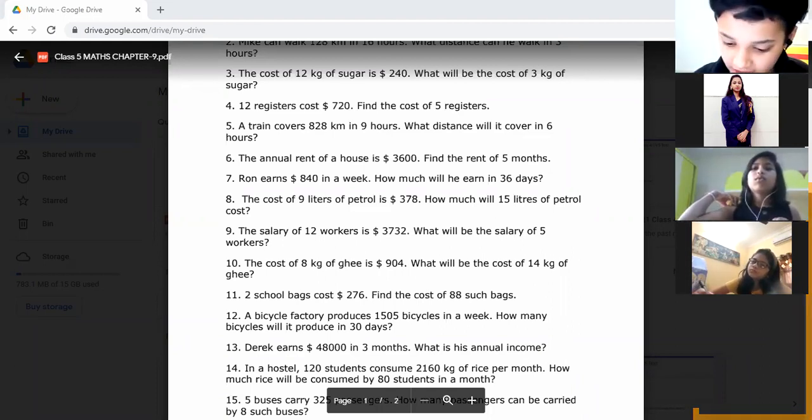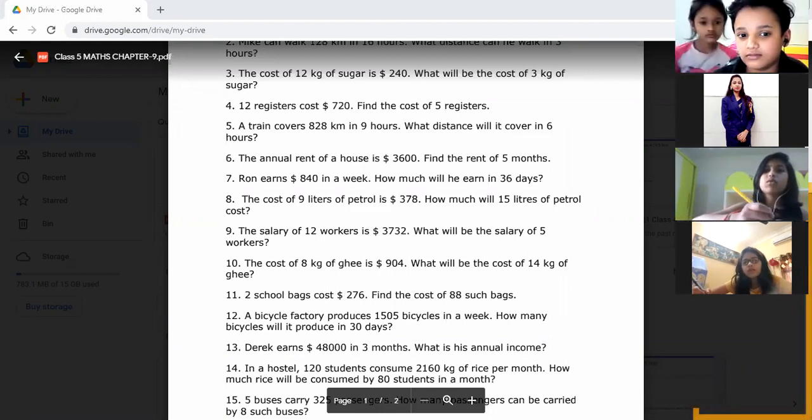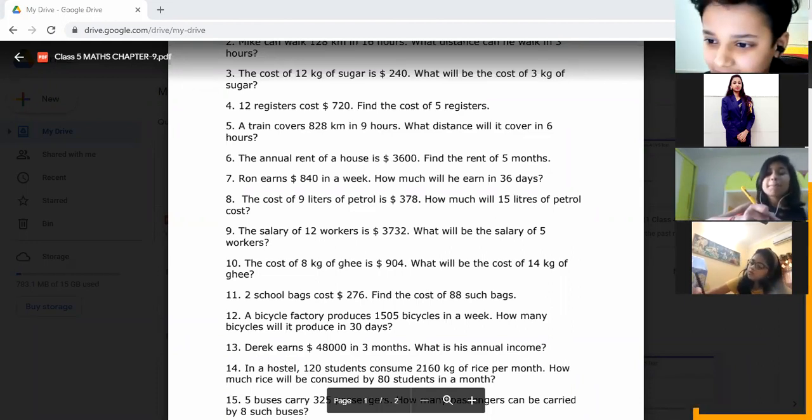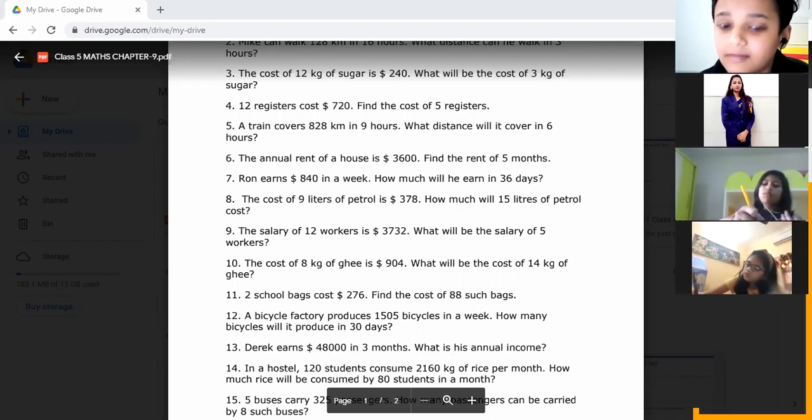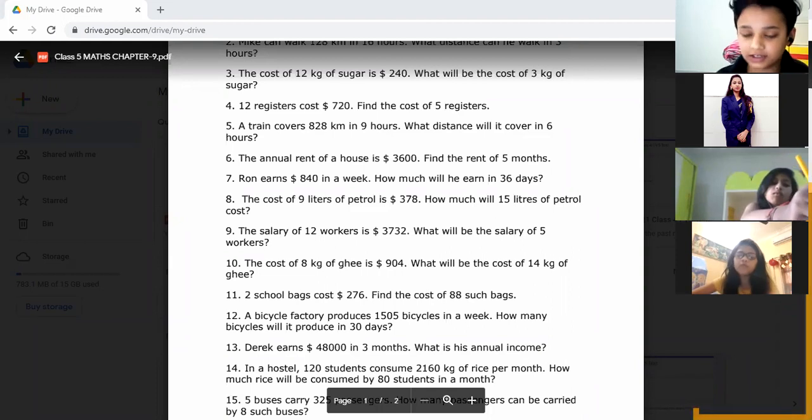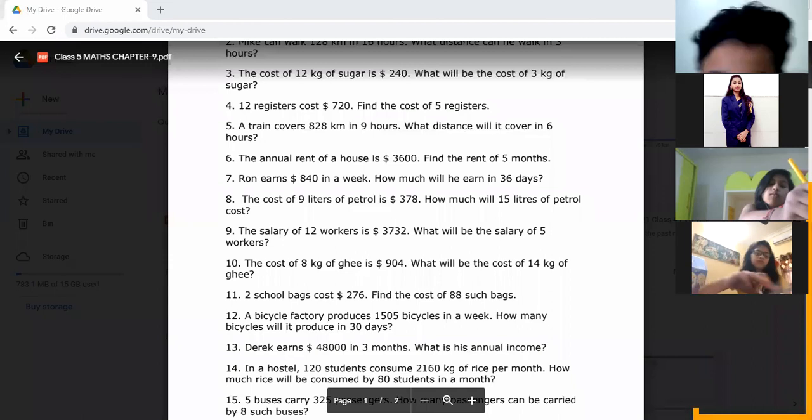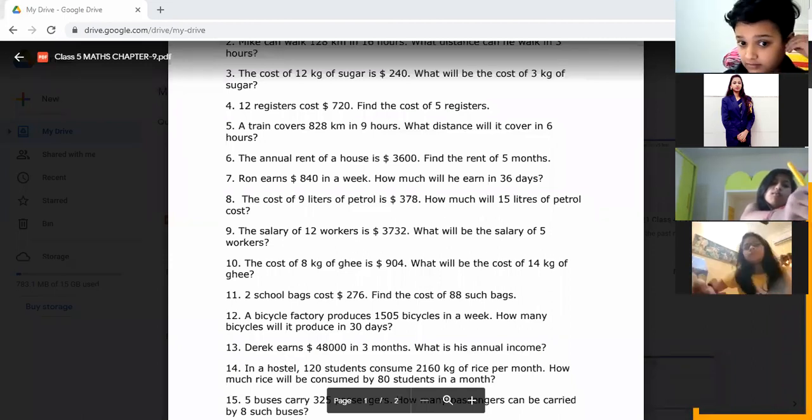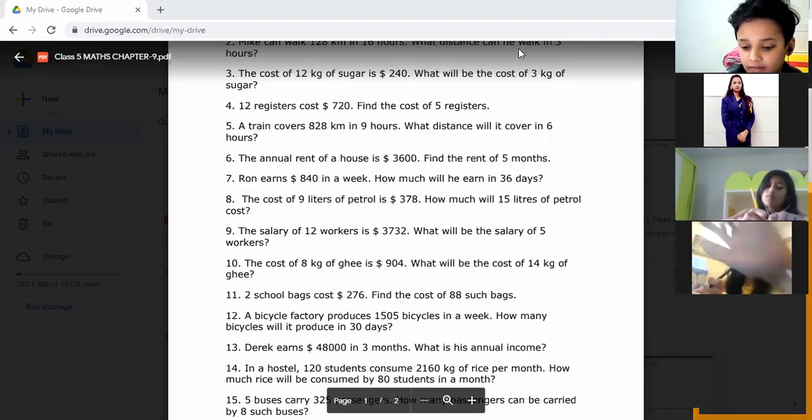Question 13: Derek earns 48,000 in 3 months. My answer by dividing is 1,600. It should be 16,000. 48,000 divided by 3 is 16,000, not 1,600. Then multiply by 12 because annual income means 12 months in a year. So 16,000 times 12.